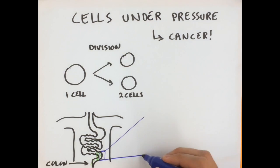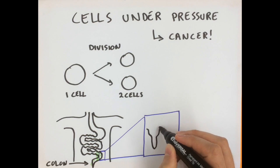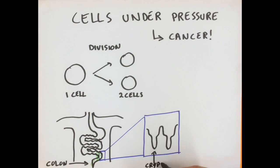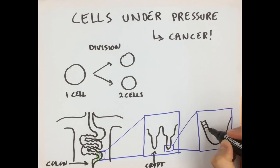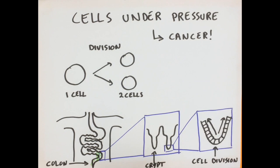In the colon, this cell renewal happens at the bottom of small structures called crypts. When cells divide normally, the new cells move towards the tip of the crypts.